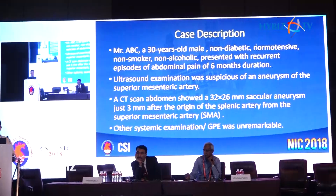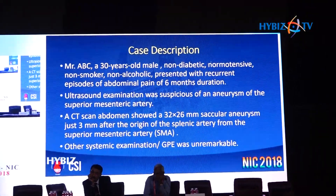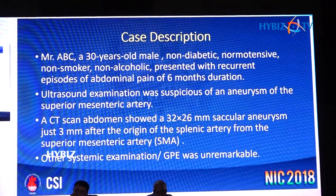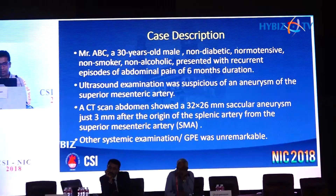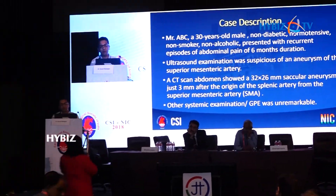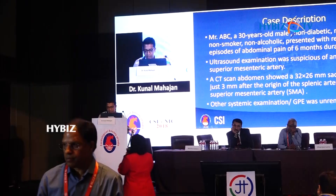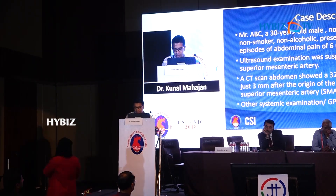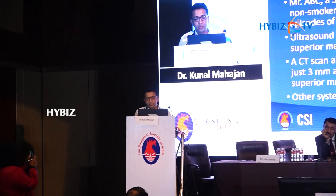A 30-year-old young male with no significant past history presented with complaints of recurrent episodes of abdominal pain. He had an ultrasound done outside which revealed an aneurysm of the superior mesenteric artery. However, we got a CT done and rather than a superior mesenteric artery aneurysm, there was a splenic artery aneurysm.